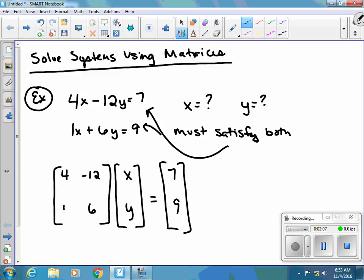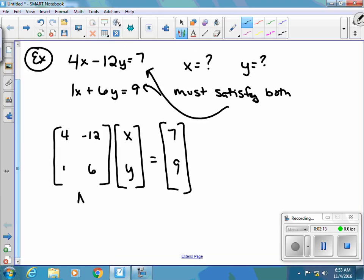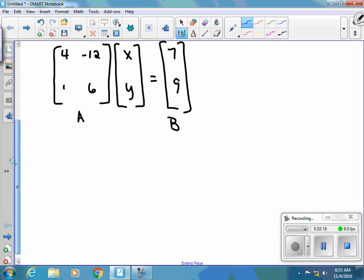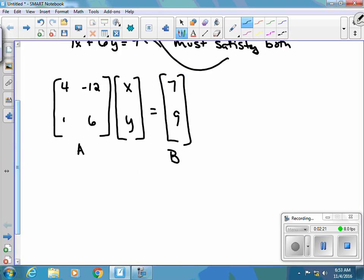So from here, I need to actually go ahead and solve that. So how do I do that? This right here is considered matrix A. This is considered matrix B. What you would do is you would take the inverse of your matrices to both sides so that it would cancel the A. So we would do A negative 1 times A equals A negative 1 times B.